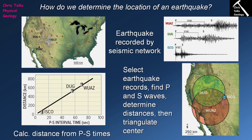The epicenter is the point on the Earth's surface directly above the hypocenter, which is where the earthquake actually occurs. To accurately locate an earthquake you need a minimum of three seismic stations. You measure the P-S wave interval from each seismogram, use the graph to convert the interval to a distance (which is the circle's radius), plot the circles on a map, and the point where all three circles overlap gives you the exact location.